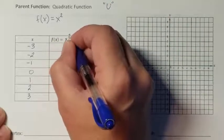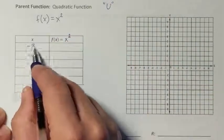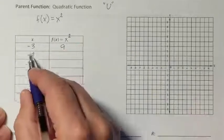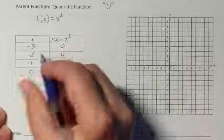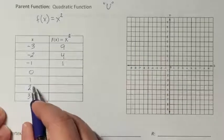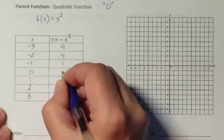So our rule was f of x equals x squared. So if I have negative 3 and I square it, I get 9. Negative 2 and I square it, I get 4. Negative 1 and I square it, I get 1. And we're going to continue down the list and we're going to keep squaring all of our numbers.